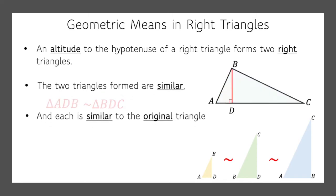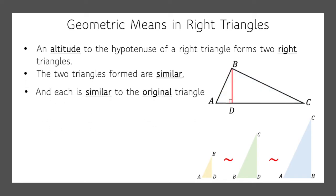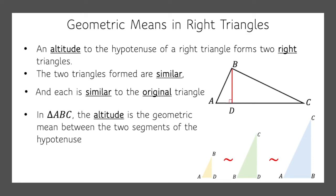Now you can take this a step further. Watch this. In triangle ABC, the altitude is the geometric mean between the two segments of the hypotenuse. So the altitude, H, it cuts the hypotenuse into two segments, X and Y. And we know that H is the geometric mean of X and Y.